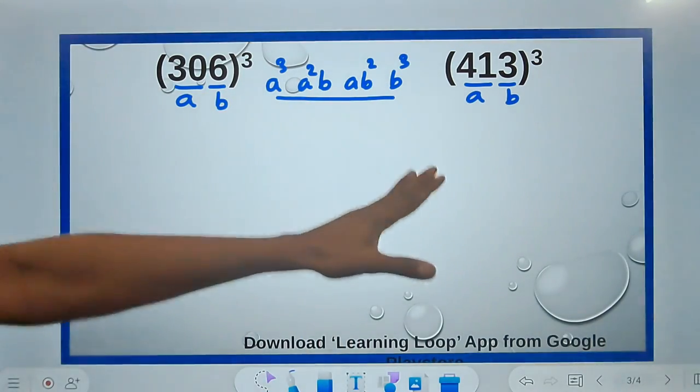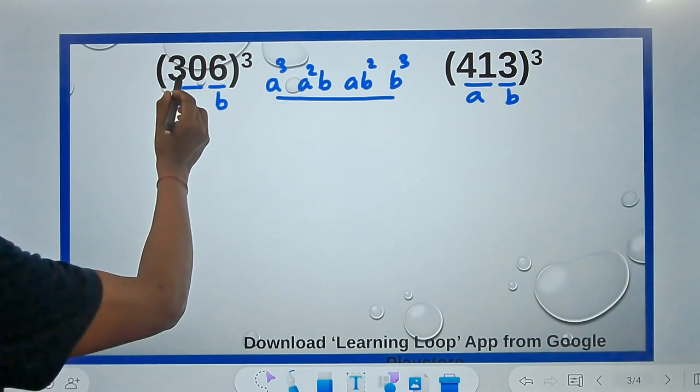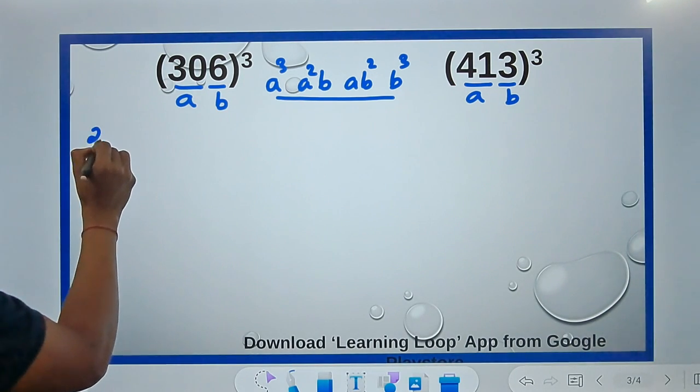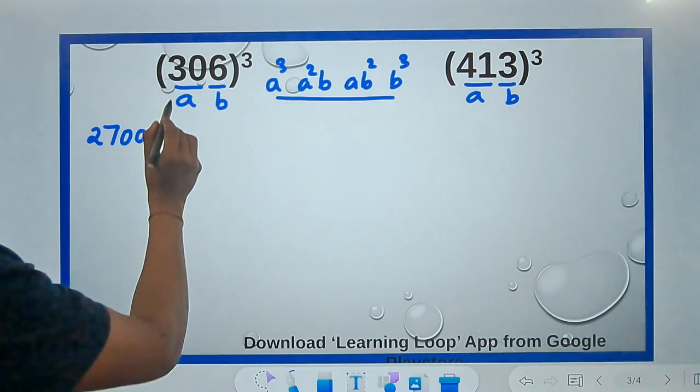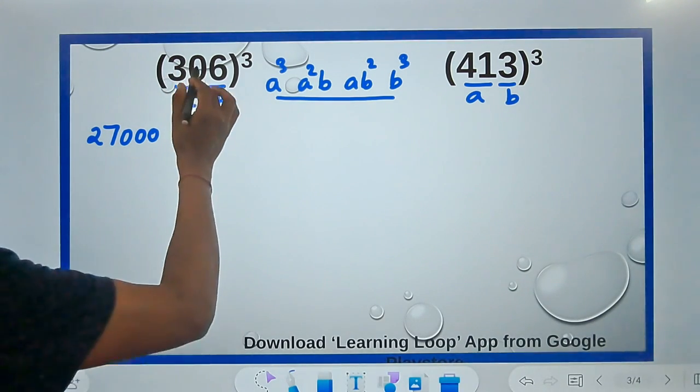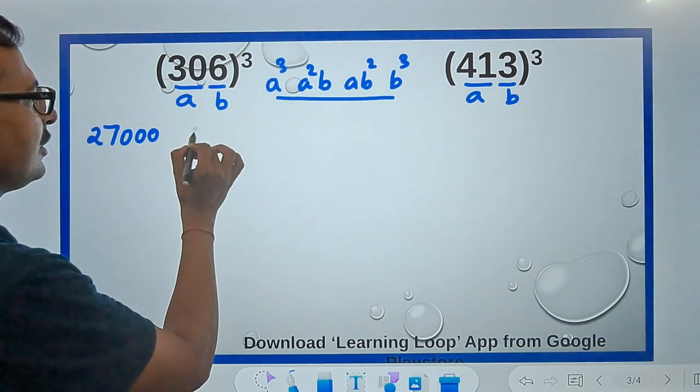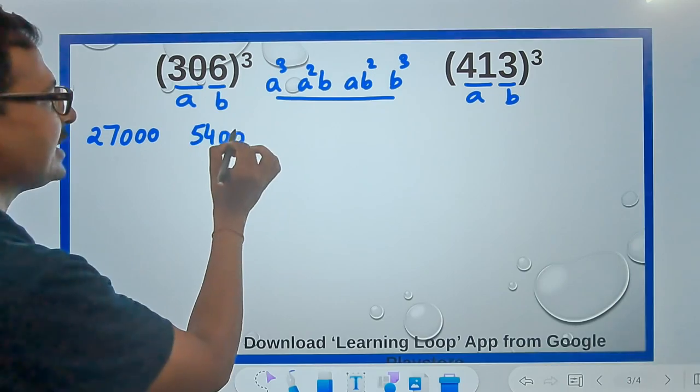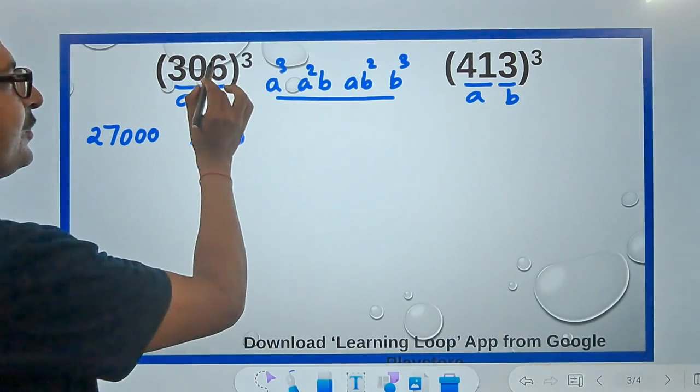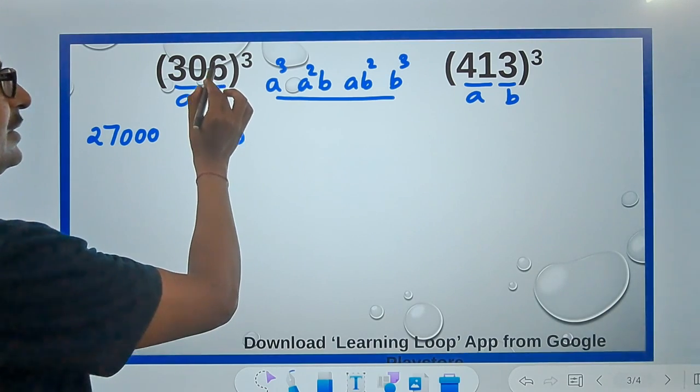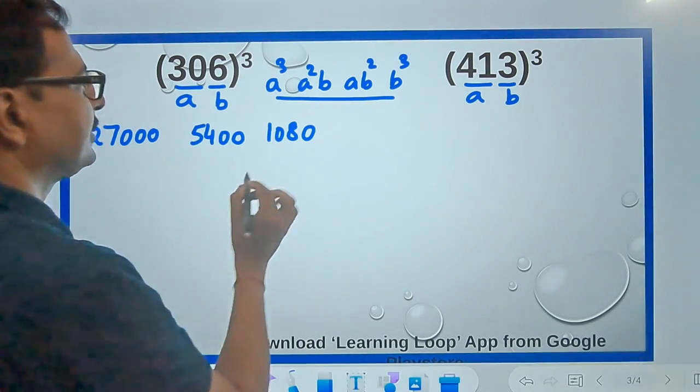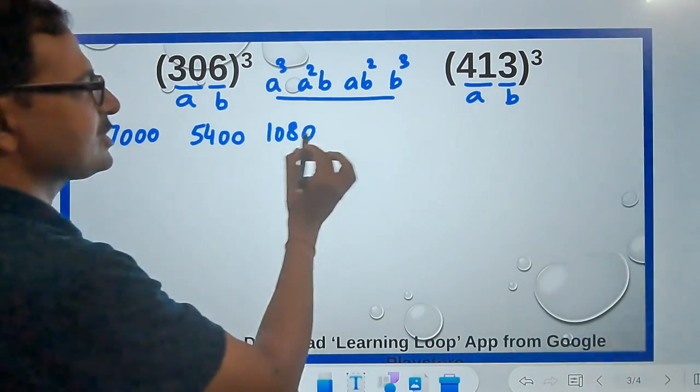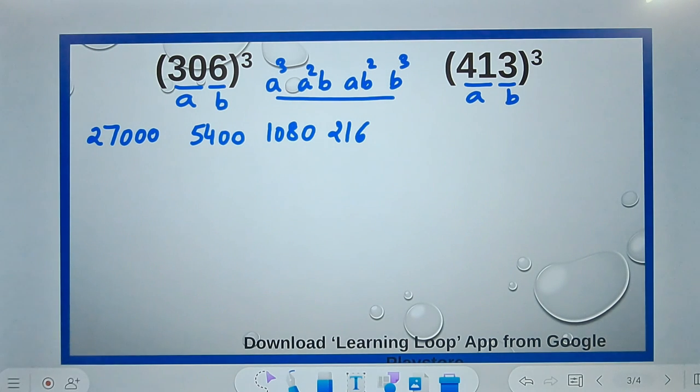These are the four numbers for both cases. a³ is 30³: 3³ is 27 followed by three zeros, that will be 30³. Then a²b, a² is 30² which is 900 times 6, 9×6=54, and then double zero because it was 900×6. Then ab², b² is 36 times 30, 36×3=108, so 108 and a 0 gives you 36×30. And then 6³ is 216. Now these are the four numbers which you have to get to very quickly and smartly.